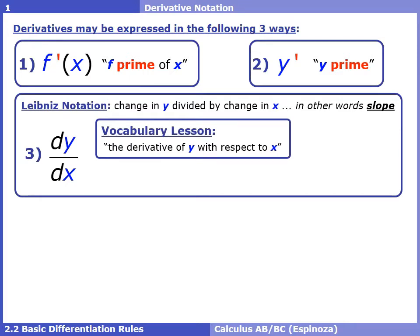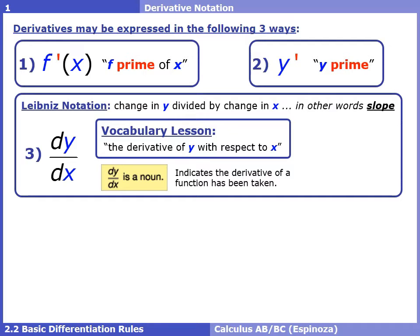When you say dy dx, we're talking about the derivative of a function y with respect to its variable x. When you see dy dx, it is the same thing as f prime and y prime. dy dx is a noun — it's telling you that you have a derivative. It does not mean dy divided by dx, d times y on top, or d times x on the bottom. It's just complete notation that stands for a derivative. Be careful: it's not a fraction, and it's not indicating multiplication.